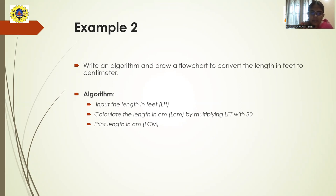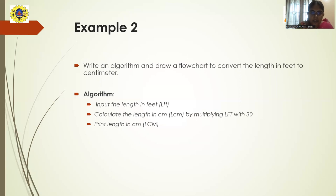Next, you have to convert the length in feet to centimeters. One foot is equal to 30 centimeters, so you multiply the given length in feet by 30. For example, if the length is 5 feet, you multiply 5 by 30, which gives 150 centimeters — wait, that would be 150 — but illustratively the answer for 5 feet would be 150 centimeters. Finally, you print the length in centimeters. So those are the steps: input in feet, convert to centimeters, then print.